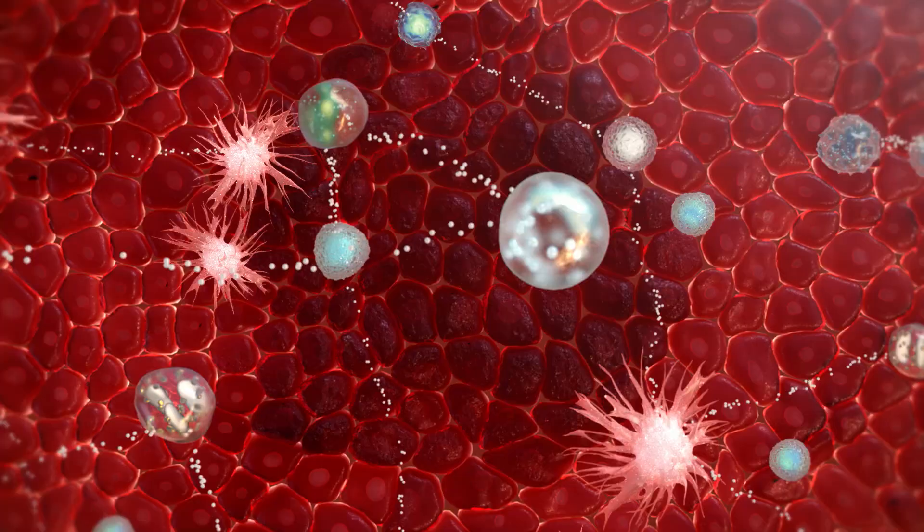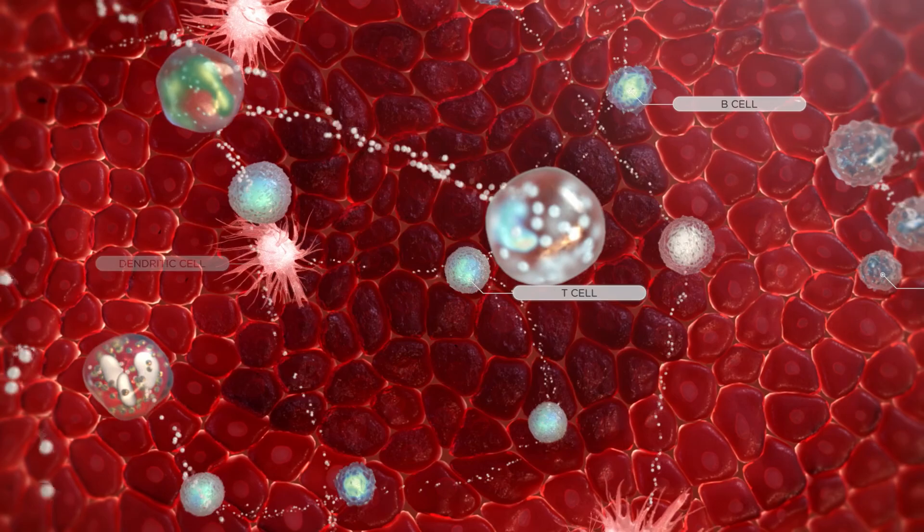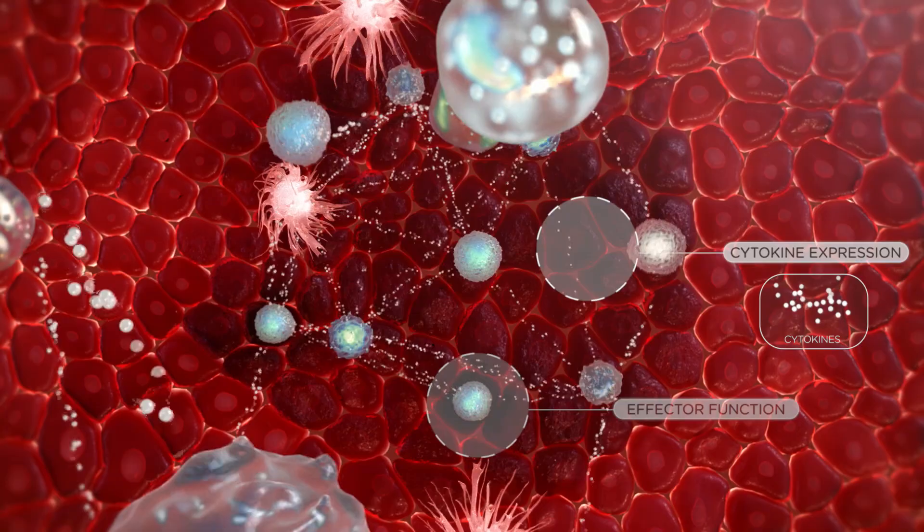In immune cells such as T-cells and B-cells, macrophages, and dendritic cells, the immunoproteasome controls key cellular functions such as cell migration, antigen presentation, cytokine expression, and effector function.